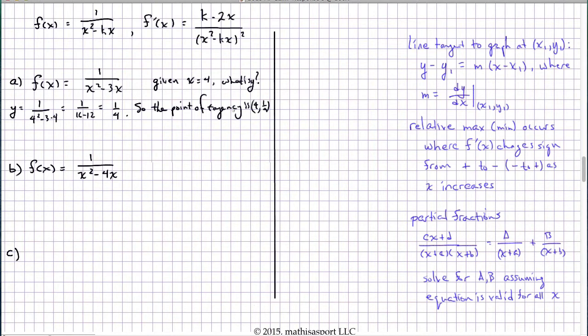Now we just need to evaluate the slope. The slope is 3 minus 2x over x squared minus 3x, the quantity squared, where x equals 4. If you walk through this, you'll come up with a slope of negative 5 sixteenths. It's going to be 3 minus 2 times 4, all over 4 squared minus 3 times 4, and then that quantity squared.